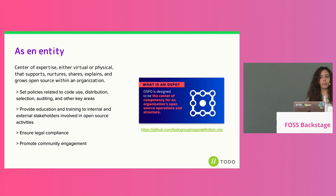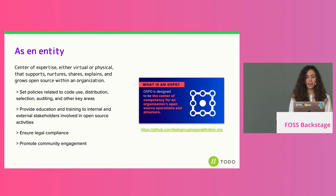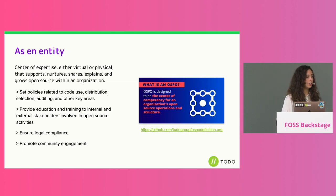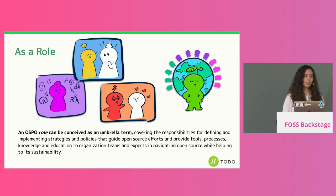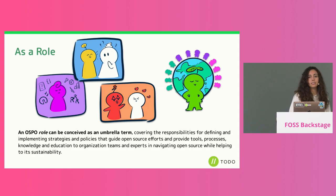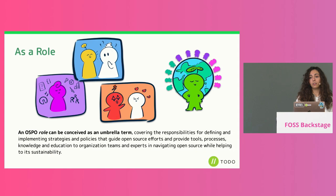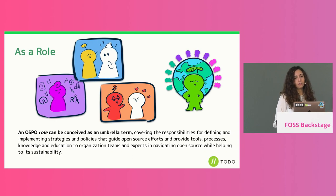Even in this conference the term OSPO has been popping up many times as an entity — a center of competency for open source operations. But today I want to give a different perspective and start thinking about OSPOs as a role. There are many different roles that can happen within the OSPO — it's more like an umbrella term that can take on different responsibilities: implementing strategies, policies, and processes, putting order into all the chaos of open source efforts, and making sure the organization has the right tools, processes, education, and knowledge to start giving back to open source.